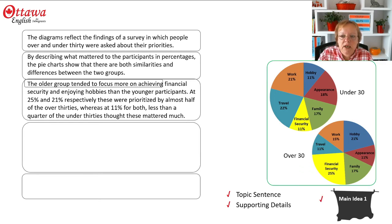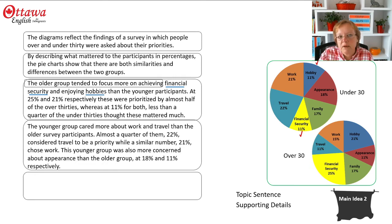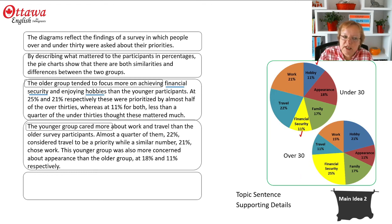As you go through and develop your ideas, you want to make sure that you talk about all of the categories in the circles. Here we've talked about financial security and hobbies. Now we go into our second paragraph about the younger group: the younger group cared more about work and travel than the older survey participants. Almost a quarter of them — 22% — considered travel to be a priority, while a similar number, 21%, chose work. This younger group was also more concerned about appearance than the older group, at 18% and 11% respectively.